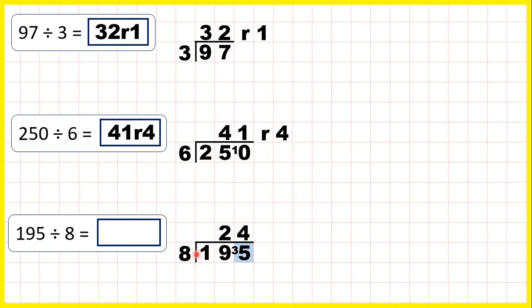Well 4 times 8 is 32, but then to get to 35 from 32, we need 3 more. So our remainder is 3. So 195 divided by 8 is 24 remainder 3.